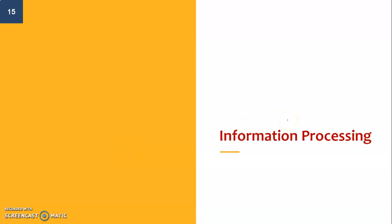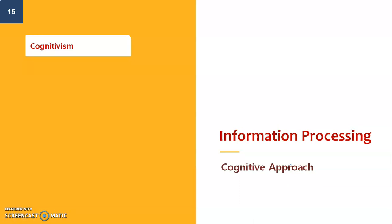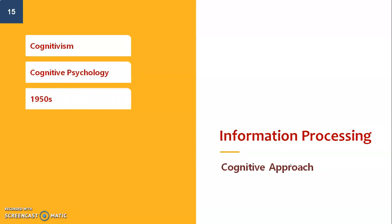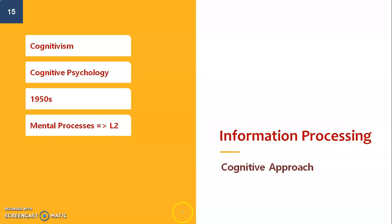We're moving to the information processing approach, or the cognitive approach. Whenever we talk about cognitivism, we mean things related to the brain and the functions of mental processes. Cognitivism was based on cognitive psychology, which was trending during the 1950s. According to the cognitive approach, second language acquisition was based on mental processes, just like any other behavior or process that happens in the brain.